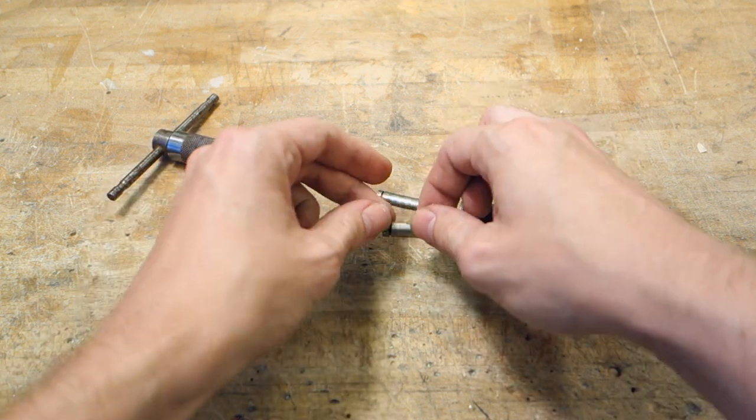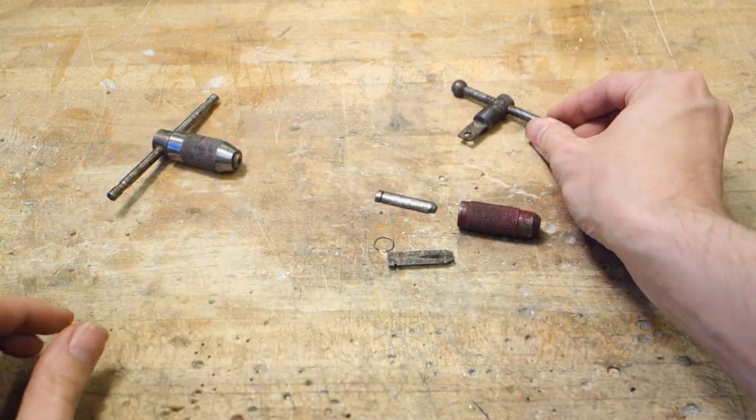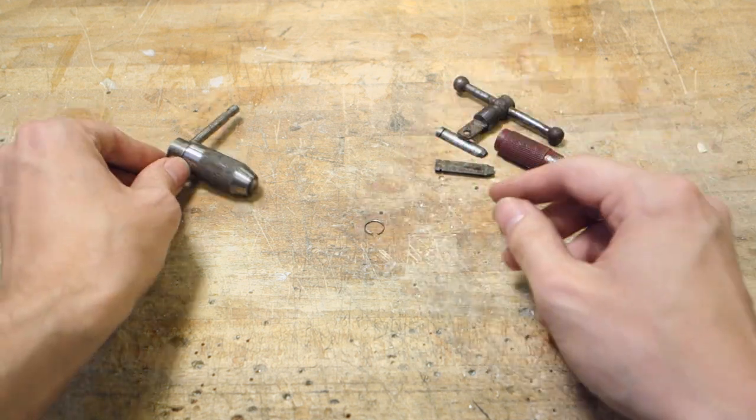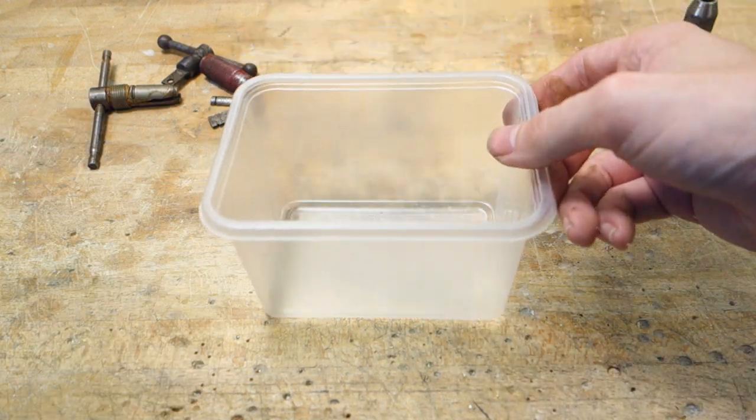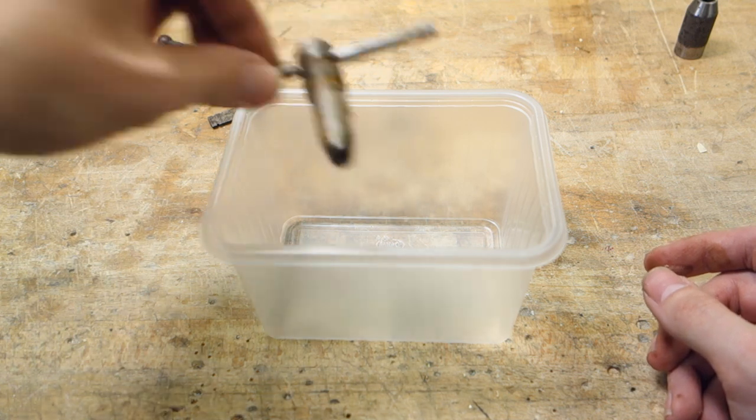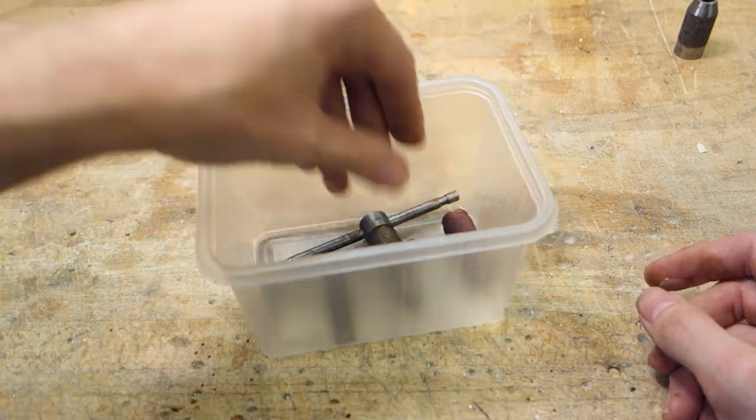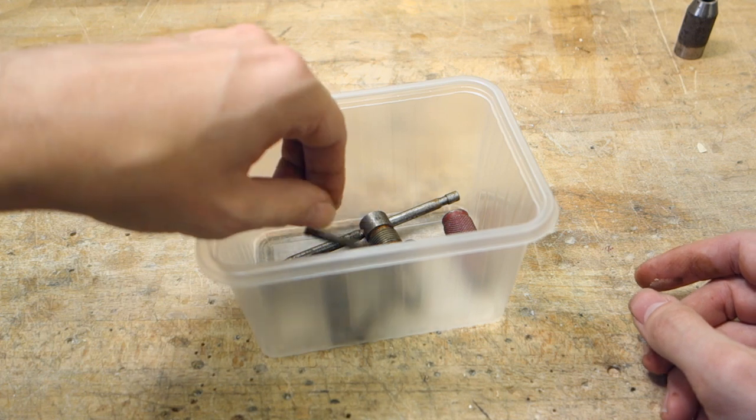First things first, start by disassembling the tap handles. Make sure you don't lose any parts, and place them into a plastic container. In case yours won't come apart, hang on for a future video where I tackle what to do with seized tools.